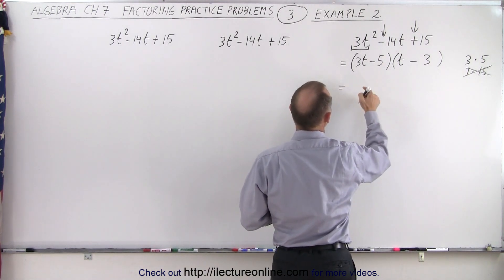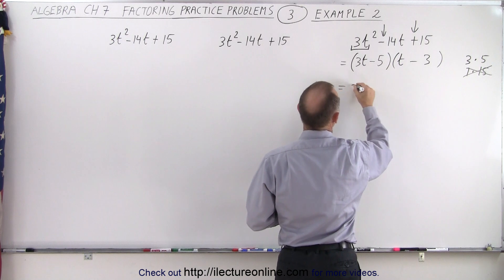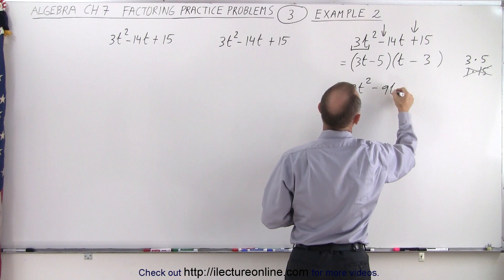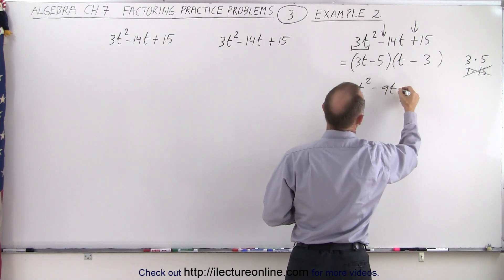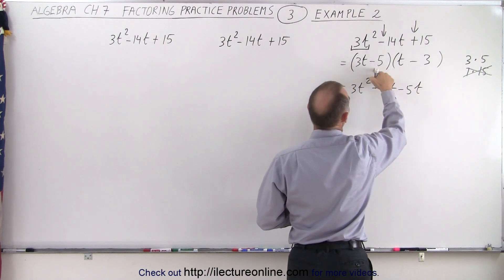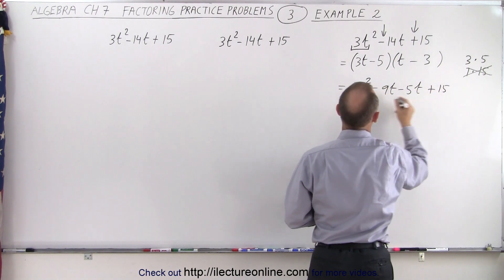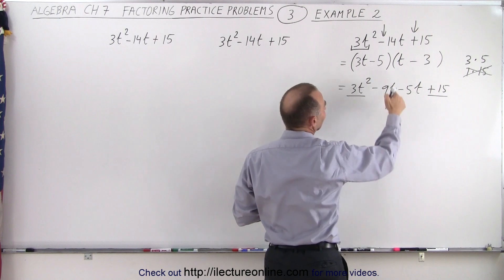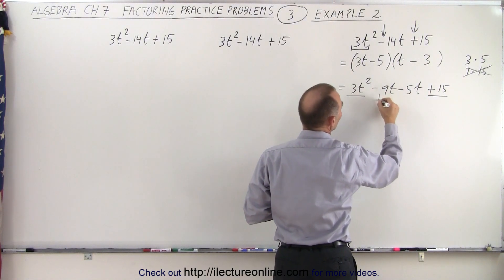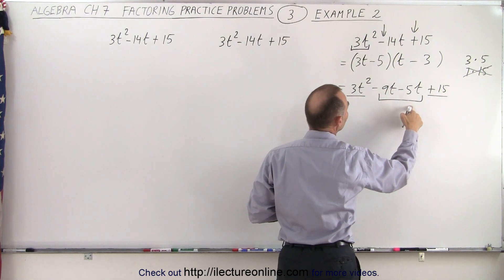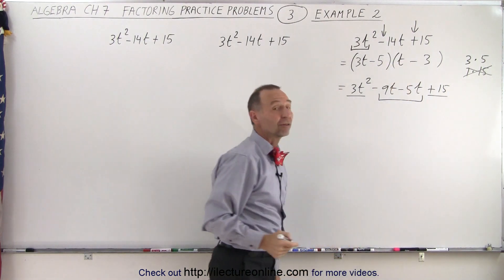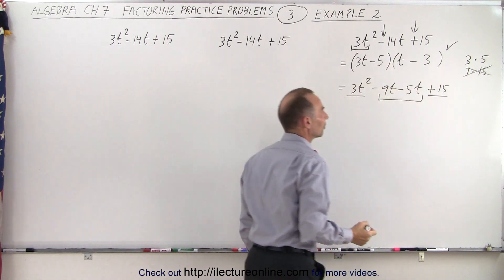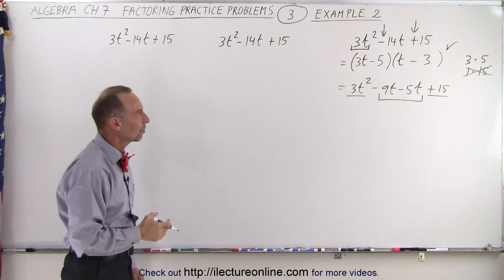So let's multiply this together. So 3 times t gives us 3t squared. 3t times a negative 3 is a negative 9t. Negative 5 times t is a negative 5t and negative 5 times a negative 3 is a plus 15. Notice we get the first and the last terms like we suggested and then notice that if we add these two together minus 9t minus 15t gives us back the minus 14t. So we know that we did it correctly over here. So that's kind of a little bit by guesswork and a little bit of intuition.